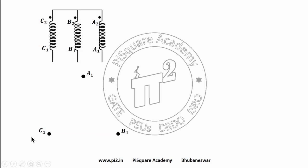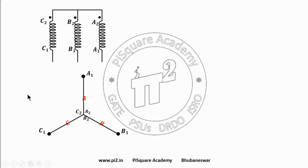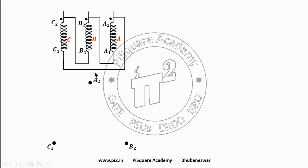Next, the second configuration. Here the connection terminals are A1, B1, C1, so I have taken A1, B1, C1. Now they have 120 degrees displacement, and A2, B2, C2 are connected together. This is the second star configuration. Next, this is the form of delta — here the connection terminals are A2, B2, C2.